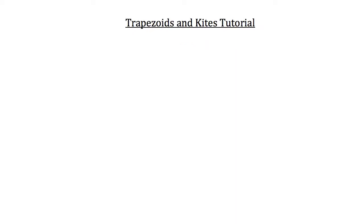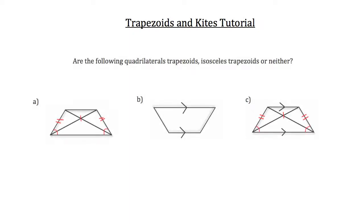Now that you've seen regular trapezoids and isosceles trapezoids, let's see if you can tell the difference between them. Are the following quadrilaterals trapezoids, isosceles trapezoids, or neither?